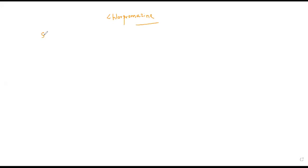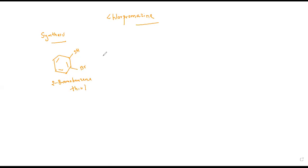The starting material used for the synthesis of chlorpromazine is 2-bromobenzene thiol, reacted with 2,5-dichloronitrobenzene.